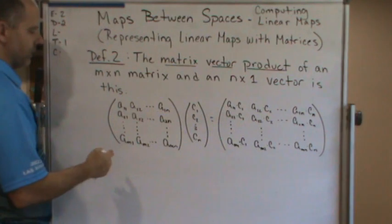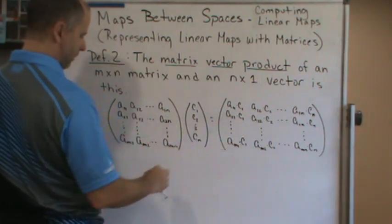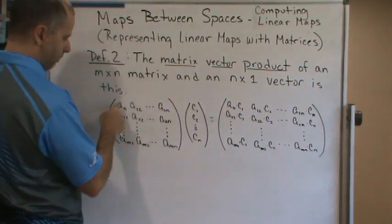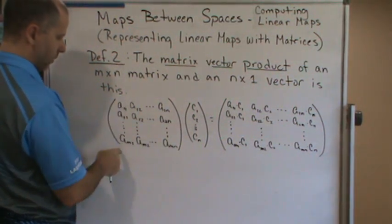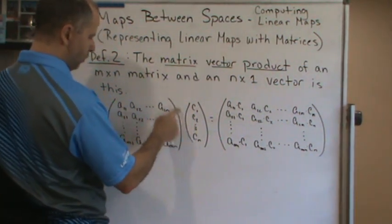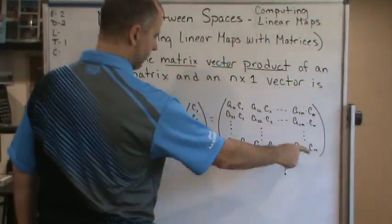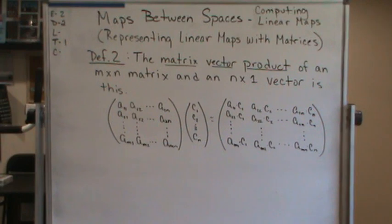The product of these two is given by this. You're going to take C1, multiply it by the first column. Take C2, multiply it by the second column, and so on, and you'll get this matrix. It's called the matrix-vector product.